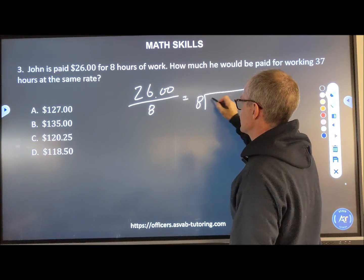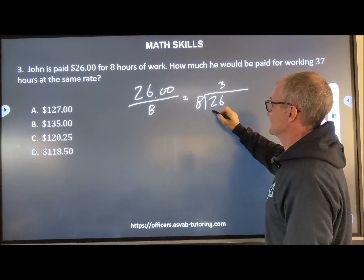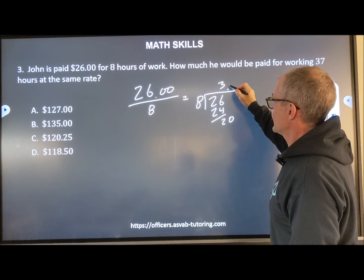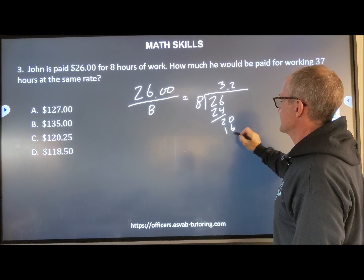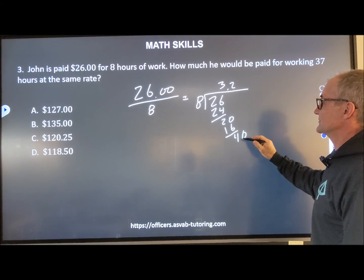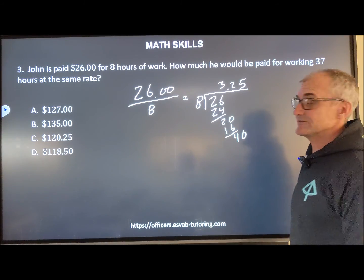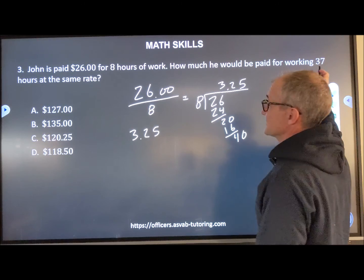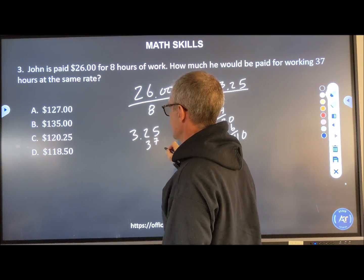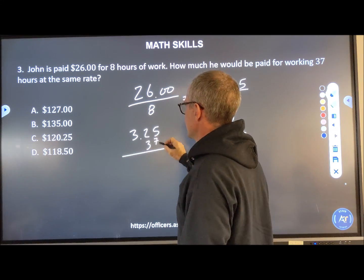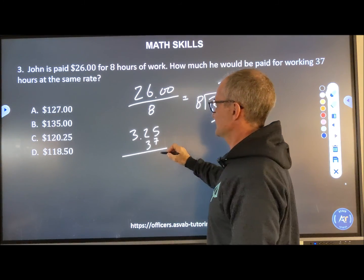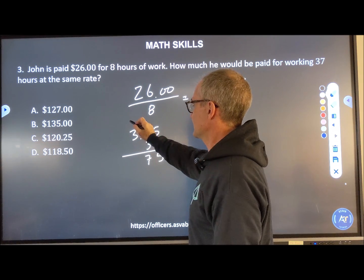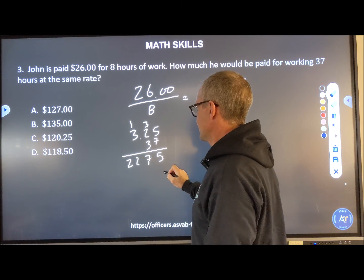Eight goes into 26 three times — eight times three is 24, remainder two. Eight goes into 20 twice, giving me 16, remainder four. Bring down the zero — eight goes into 40 five times. So he makes $3.25 per hour. Now I multiply that by 37 hours total.